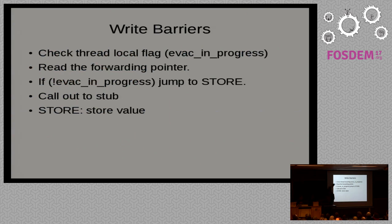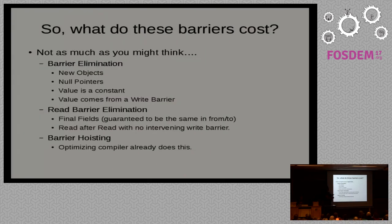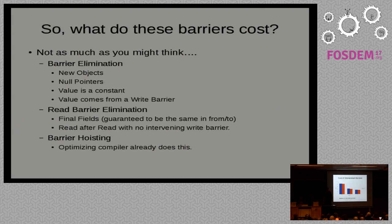Our write barriers are pretty quick. We check the evac-in-progress thread-local flag and read the forwarding pointer. If there is no evac in progress, we can skip straight to the store. So write barriers are fairly quick when you aren't evacuating objects, and if you are, they just copy the object. For barrier cost optimizations, we have C2 phases that do elimination of barriers on new objects and null pointers, read barrier eliminations on final fields, and C2 already does barrier hoisting — if you have a read barrier in a loop, it can sometimes hoist it out of the loop.